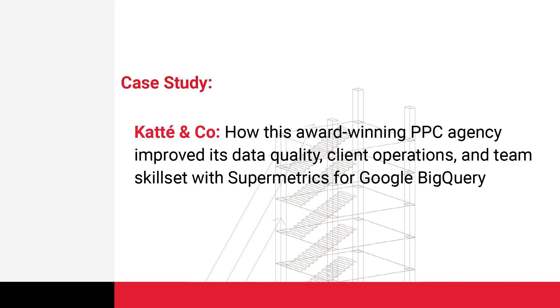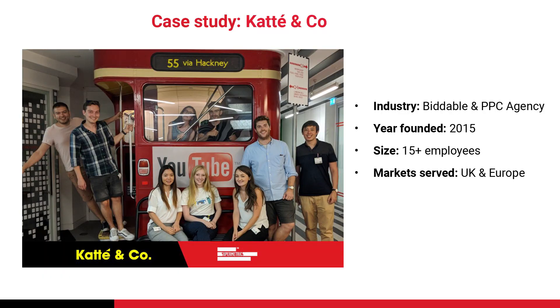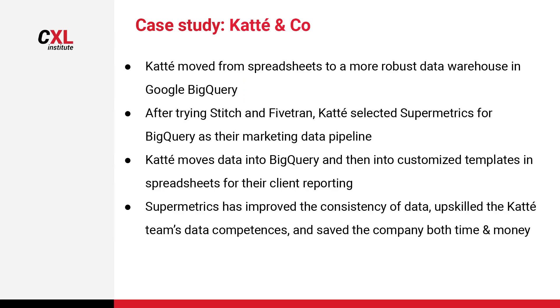Now let's take a look at our clients. Kate & Co is an award-winning PPC agency that has improved its data quality, client operations, and team skill sets with Supermetrics for BigQuery. They are a biddable and PPC agency founded in 2015, with 15 employees serving UK and Europe markets. Kate & Co moved from spreadsheets to a more robust data warehouse in Google BigQuery. After trying Stitch and FiveFront, they selected Supermetrics for BigQuery as their marketing data pipeline. Supermetrics has improved the consistency of data, upscaled the team's data competences, and saved the company both time and money.